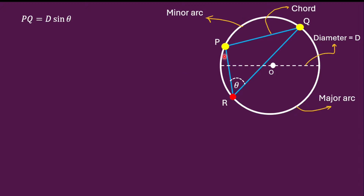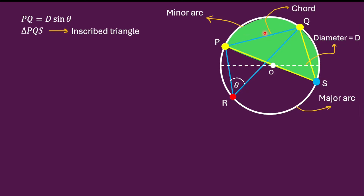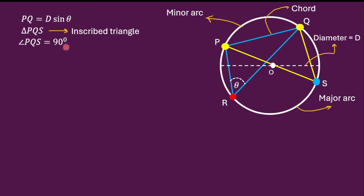Setting that aside, I now consider another point S on the same major arc such that the line joining P and S passes through the center O — meaning PS is also a diameter. I then join S to point Q and construct triangle PQS. Triangle PQS is inscribed in the semicircle defined by diameter PS, and for an inscribed triangle in a semicircle, the angle PQS equals 90 degrees.